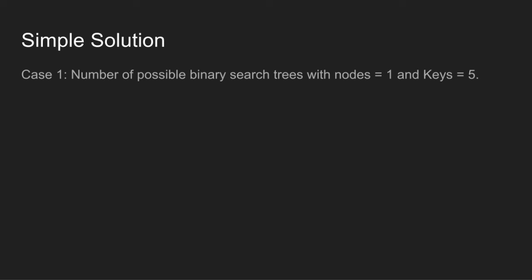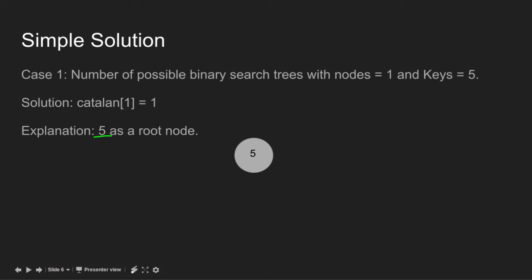Case 1 is to find number of possible binary search trees where node is 1 and key is 5. There can only be one solution where 5 is selected as a root node. Catalan is an array that stores nth Catalan value, so Catalan of 1 is 1.